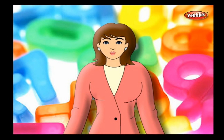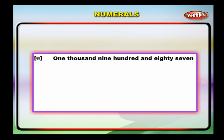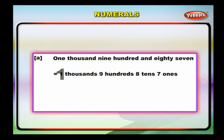Let us write the numerals for the given number names. One thousand, nine hundred and eighty-seven. We have one thousand, nine hundred, eight tens and seven ones. We write this as 1, 9, 8, 7.